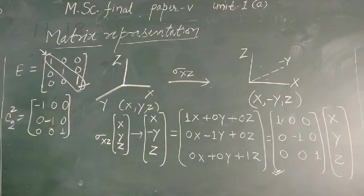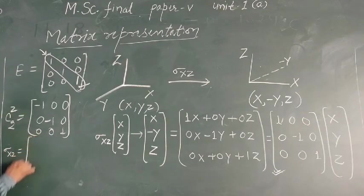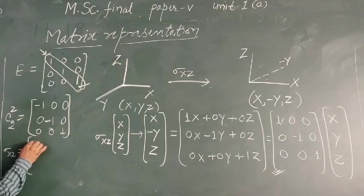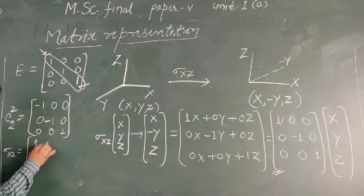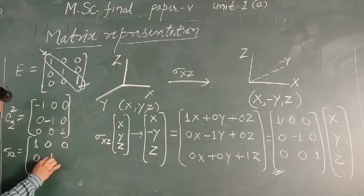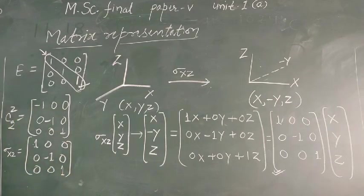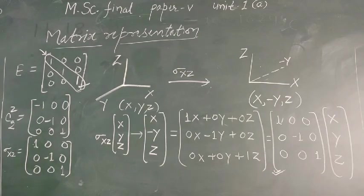So the matrix for σ(xz) has come: trace values are 1, −1, 1. The matrix is [1, 0, 0 / 0, −1, 0 / 0, 0, 1]. This is for σ(xz). In this way we have now seen the matrix representation for three symmetry elements. Now we will see for σ(yz).